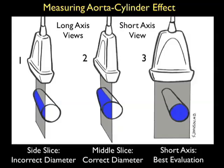This next illustration makes the point that choosing the correct probe orientation is very important for getting an accurate measurement of the aorta due to the cylinder effect. Looking at the two long axis views shown towards the left: in probe position one, we see a side slice where the probe is positioned towards the side of the aorta, underestimating the true diameter of the aortic lumen. Positioning the probe towards the middle, as in probe position two, will yield a correct diameter, but this can be difficult to ascertain using the long axis orientation.